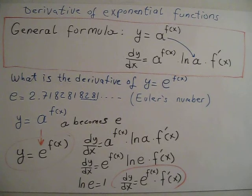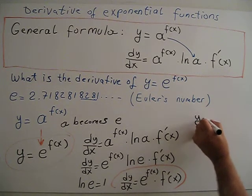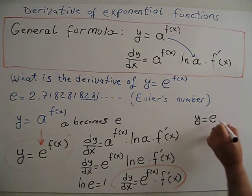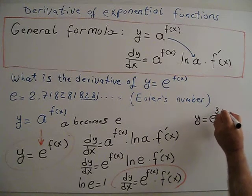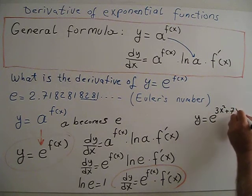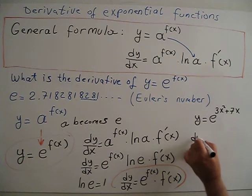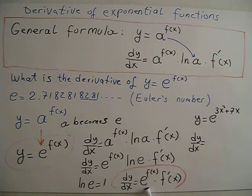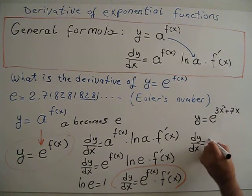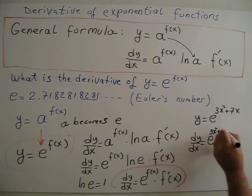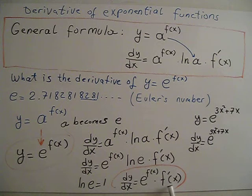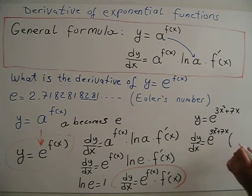For a simple example with y = e^(3x² + 7x), the derivative dy/dx = e^(3x² + 7x) · f′(x), where f′(x) is the derivative of 3x² + 7x, which equals 6x + 7. So dy/dx = e^(3x² + 7x) · (6x + 7).